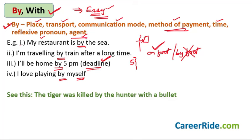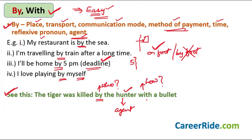Whenever something is seen as an agent — who did the action — we use 'by.' 'The tiger was killed by the hunter' — the hunter is the agent who killed the tiger. But 'How did he kill the tiger?' — 'He killed the tiger with a bullet.' So 'with' answers the question 'how' — what was the mode or instrument used. 'By' identifies the agent; 'with' identifies the instrument or means.